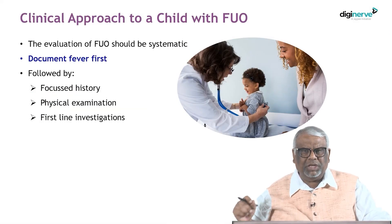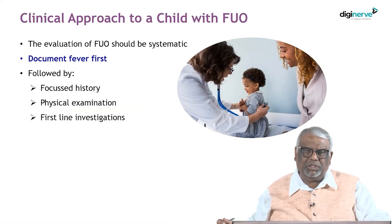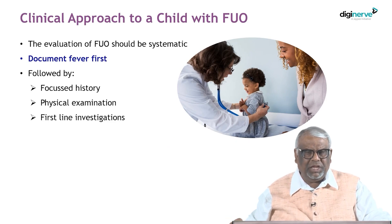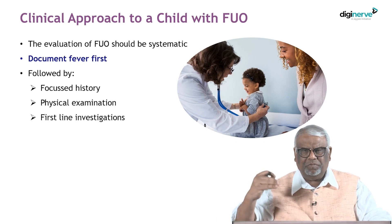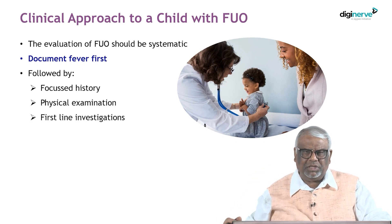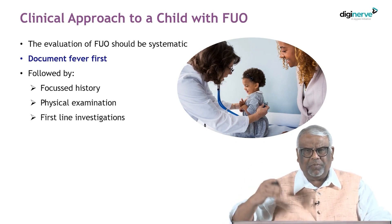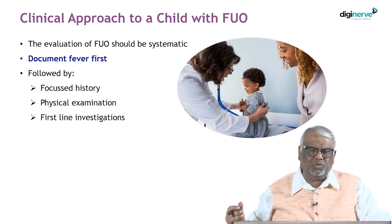How to approach a child with fever of unknown origin requires a systemic evaluation. The first step is to document the fever, then take a focused history, do a physical examination, and then perform first-line investigations. This is a stepwise manner of approach, and there are many clues you can get from the history, examination, and first-line investigations.